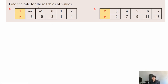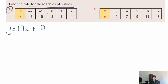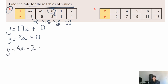Now let's put this into practice by finding the rules for these tables of values. For Table A, the general form is y equals coefficient of x plus a constant. To find the coefficient, we check how much y changes each time x increases by one — in this case y goes up by three each time. So the coefficient is positive three, giving y equals 3x. The x equals zero value is in the table and the y value there is negative two, so the equation is y equals 3x minus 2.